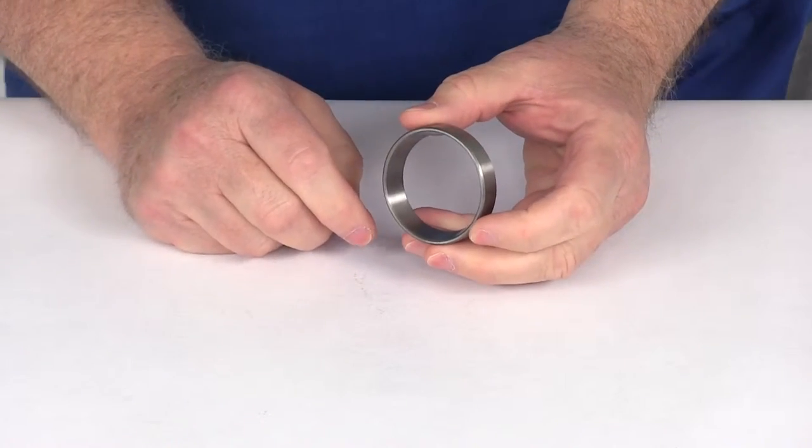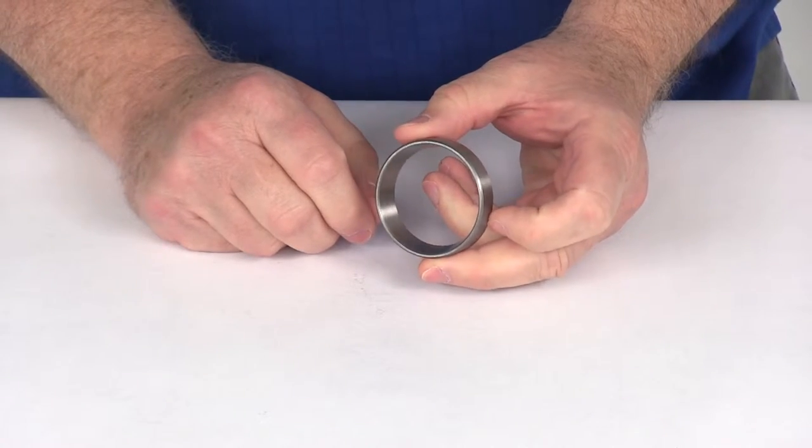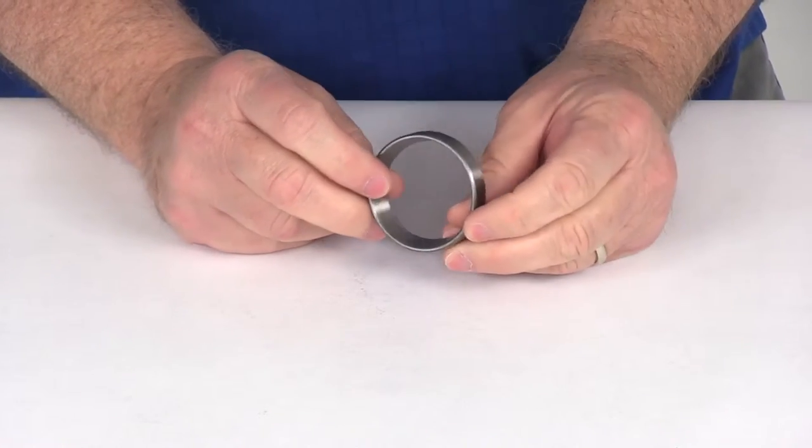Typically if you have to get new bearings, it is a good idea to also replace the races along with the bearings. Now the races do have to be pressed into the trailer hub.